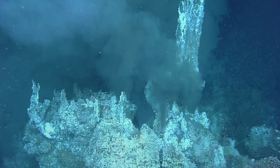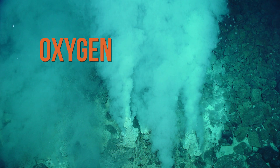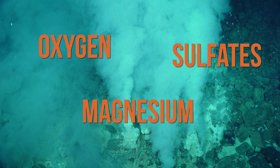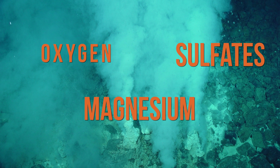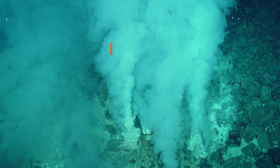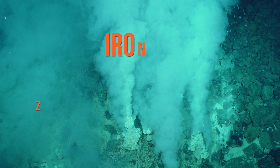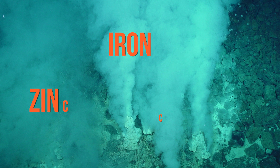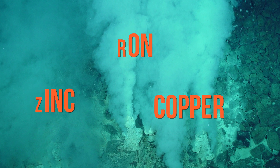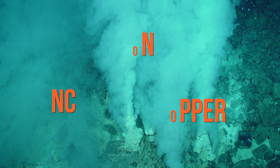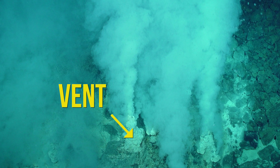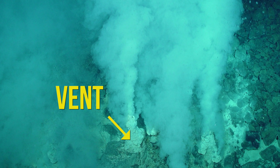Ocean water seeps into cracks in the seafloor and is heated by magma from the Earth's core. The heat causes a series of chemical reactions. The water tends to lose oxygen, magnesium, and sulfates, and picks up metals such as iron, zinc, and copper from surrounding rocks.